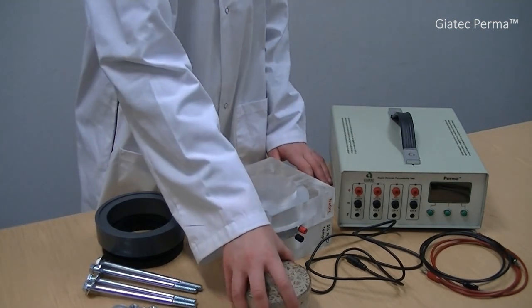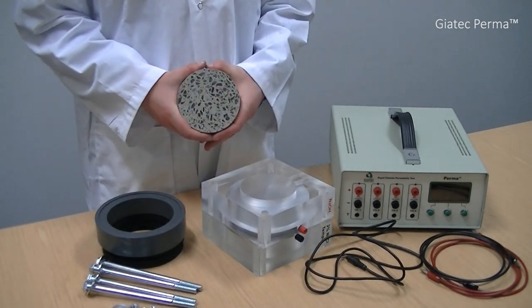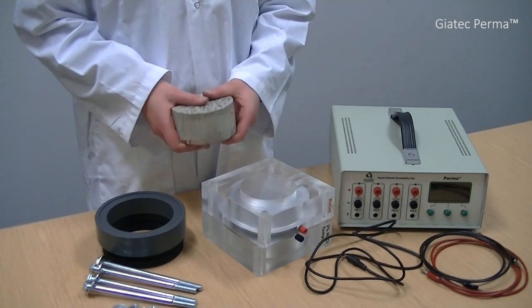According to testing standards, first I need to prepare my concrete sample as a 100 mm or 4 inches diameter cylinder with a thickness of 50 mm or 2 inches like this.